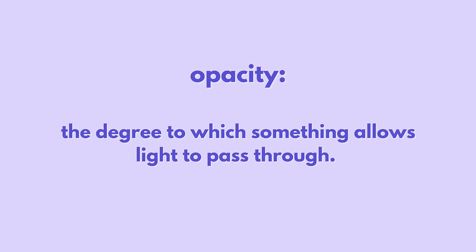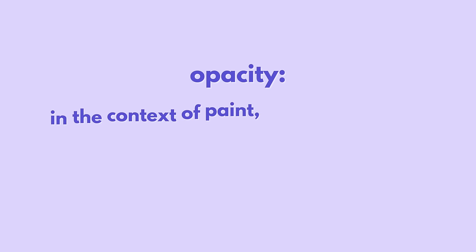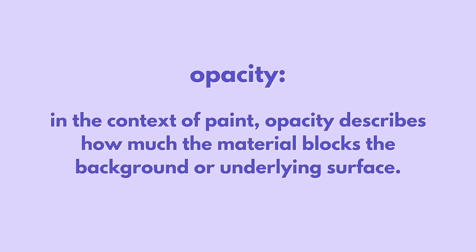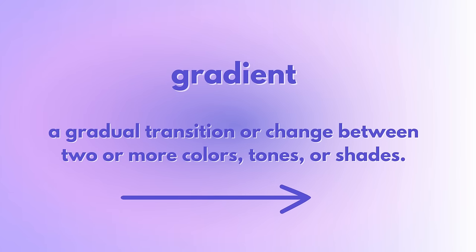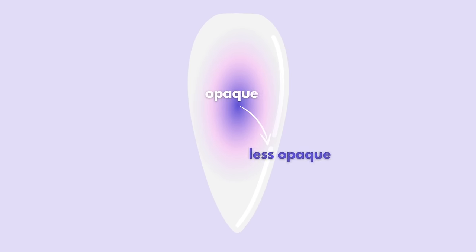Opacity refers to the degree to which something allows light to pass through it. In the context of materials like paint, opacity describes how much the material blocks the background or underlying surface. By smoothly transitioning from opaque to sheer or translucent, we create a gradient. If you can keep this in mind, you will be able to create the smoothest gradients and get the airbrushed look with and without an airbrush.